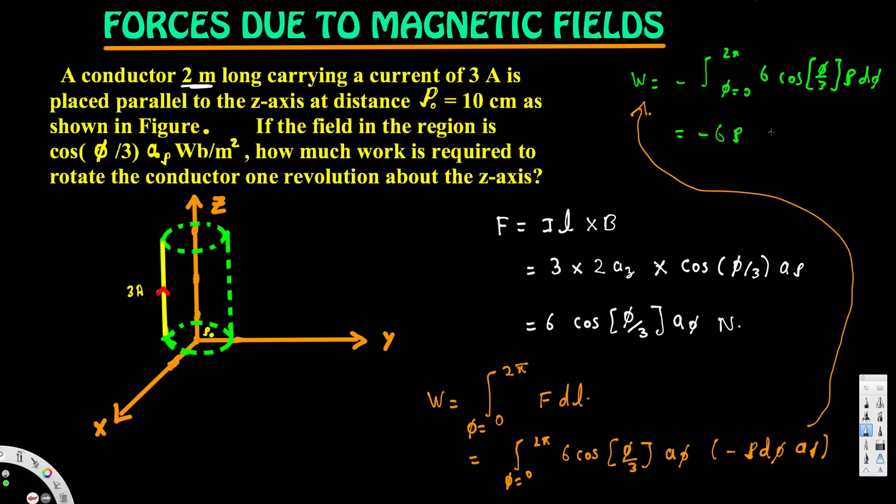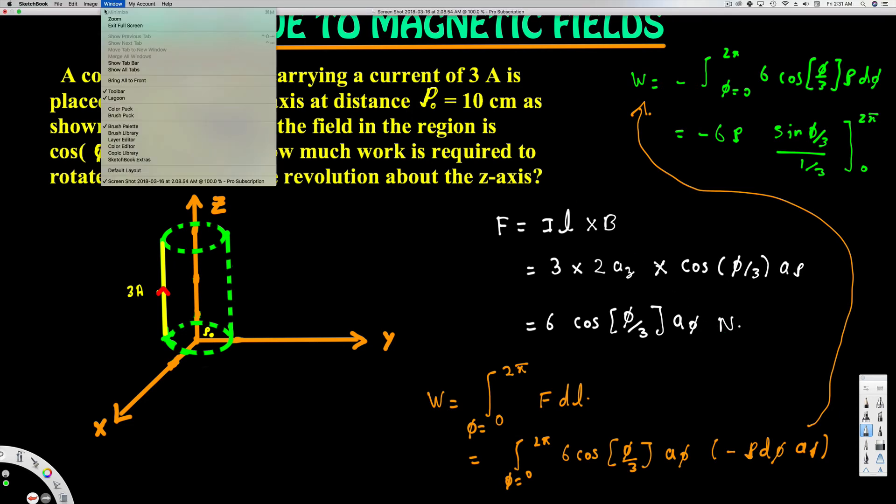...that's going to become sin(5φ/3) divided by 1/3, and that's going from 0 to 2π. Now if we plug the values, let's get rid of this part.